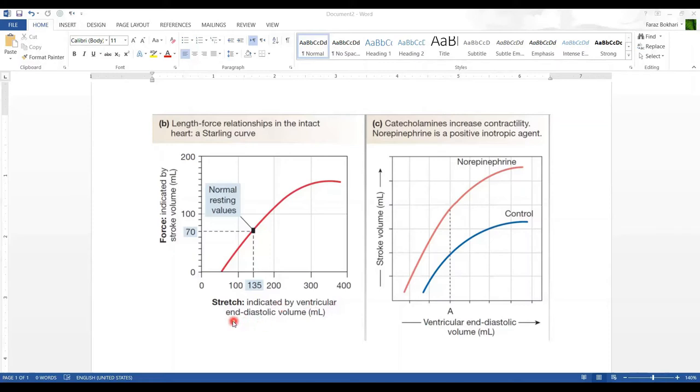The more the end diastolic volume, the more the stretch. What did Frank and Starling discover? They discovered that the more stretch you do, of course within limits, the more force the myocardium exerts during contraction.